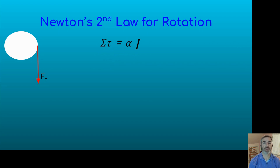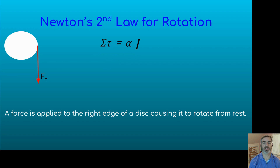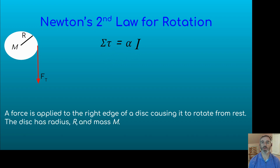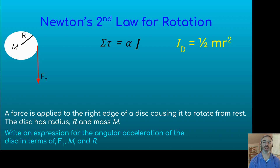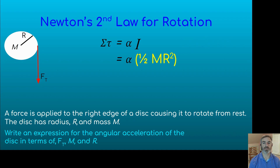We have a disk that has a force applied at the right edge causing it to rotate from rest, so it's angularly accelerating. The disk has a radius of R and a mass of M. Our question is to write an expression for the angular acceleration of the disk in terms of Ft, M, and R. The disk has a rotational inertia of one half MR squared, so we substitute that in for I.